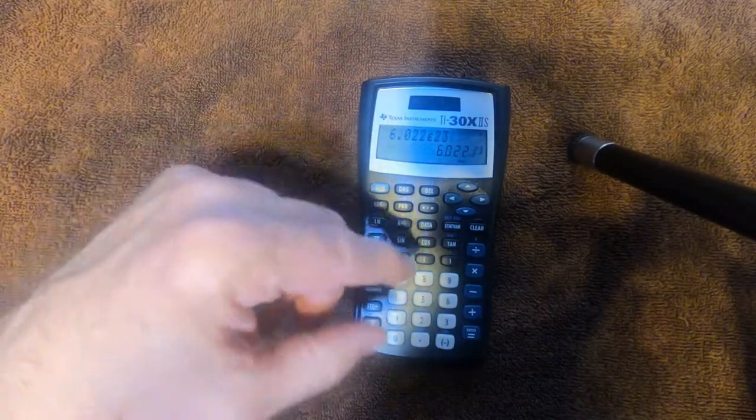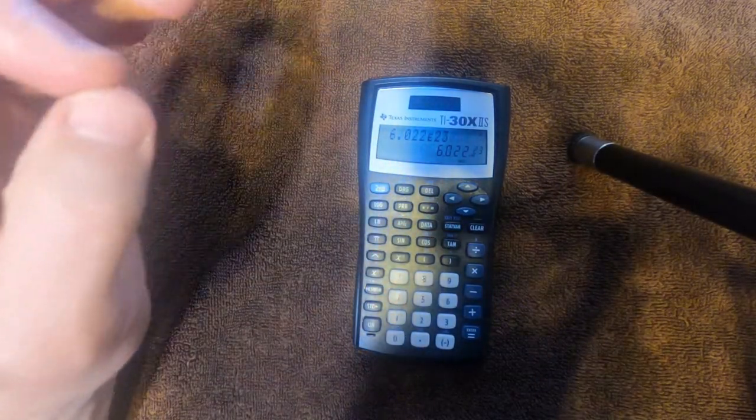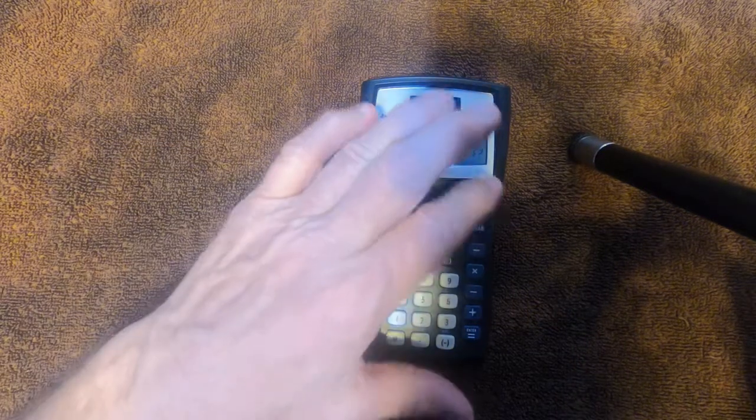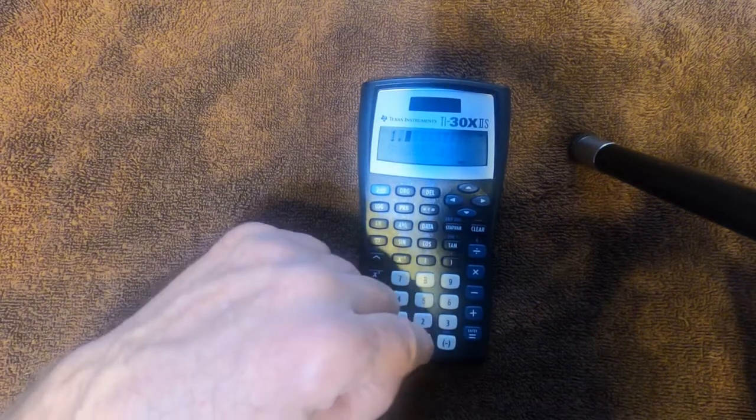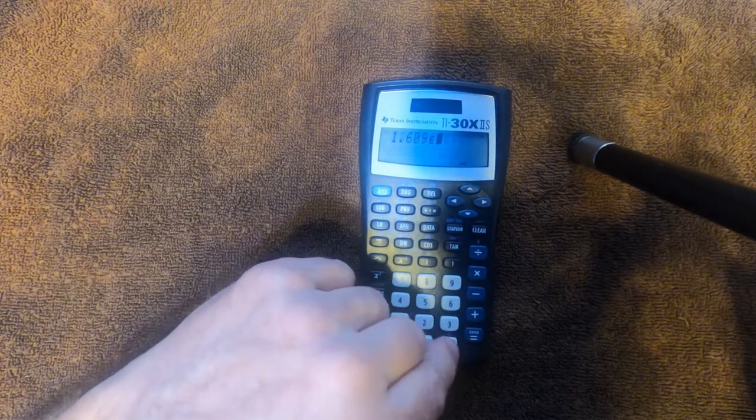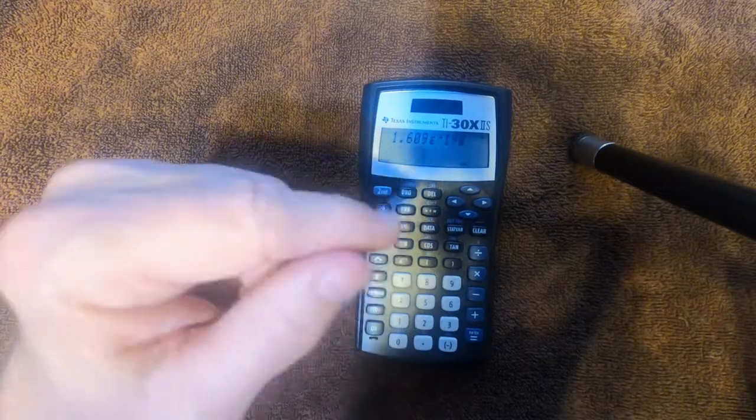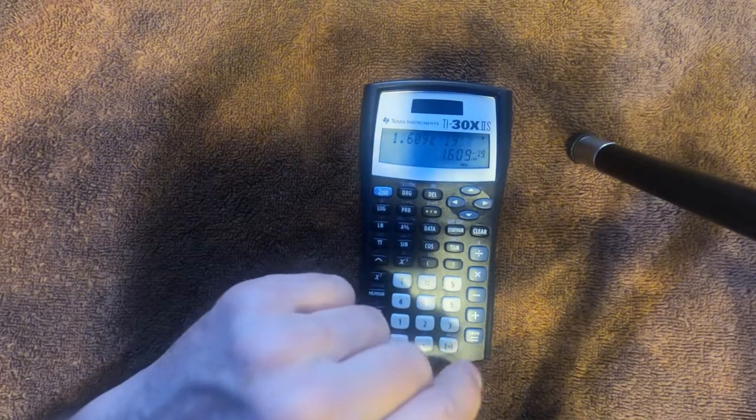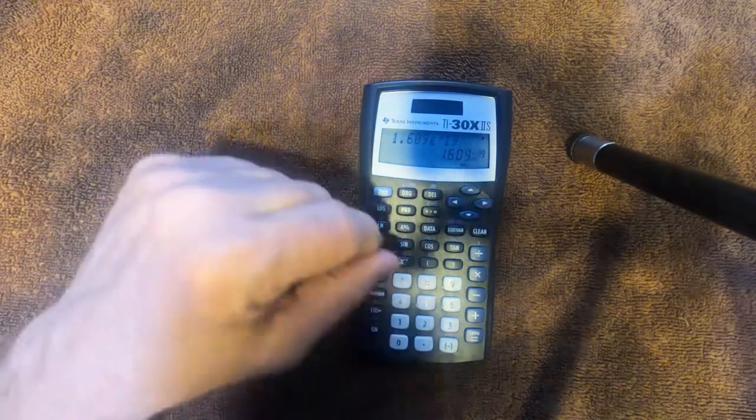Negative exponent, just as easy. Let's say 1.609 times 10 to the minus 19th. We just put 1.609, second, EE, this negative right here, and then the power, 19. And that's 1.609 times 10 to the minus 19th.